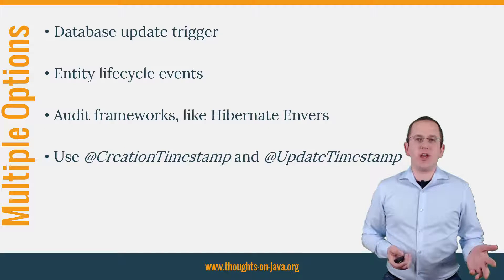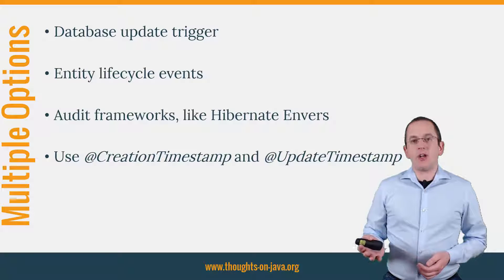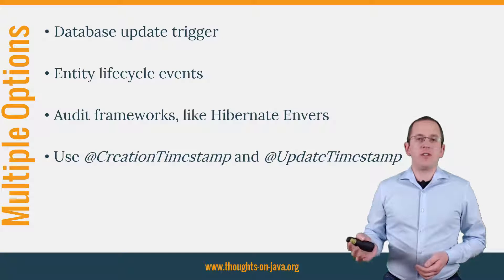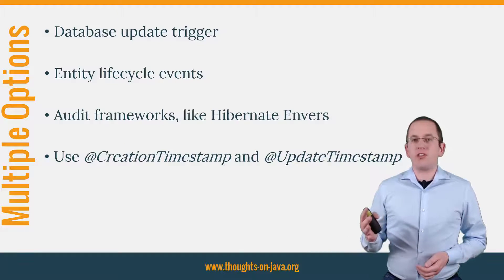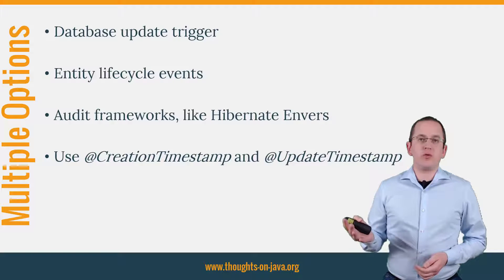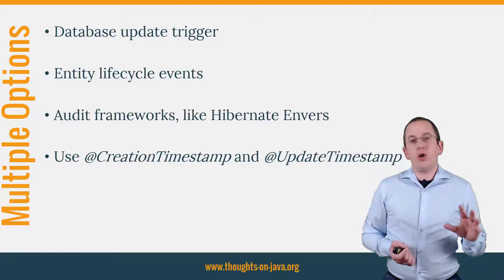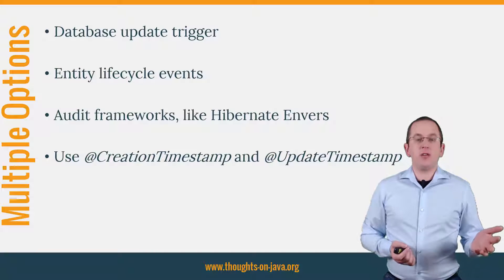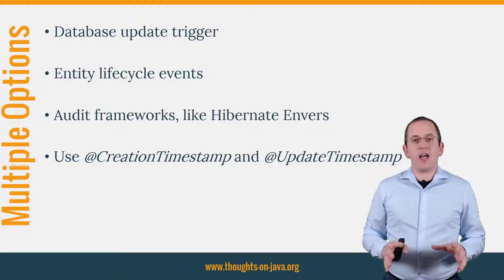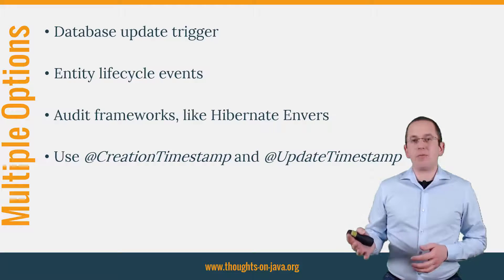As so often, there are multiple ways to achieve that. You can use a database update trigger that performs the change on a database level. Most DBAs will suggest this approach because it's easy to implement, but Hibernate needs to perform an additional query to retrieve the generated values from the database. You can use an entity lifecycle event to update the timestamp attribute before Hibernate performs the update. Or you can use an additional framework, like Hibernate Envers, to write an audit log and get the update timestamp from there. You can also use the Hibernate-specific @CreationTimestamp and @UpdateTimestamp annotations and let Hibernate trigger the required updates.